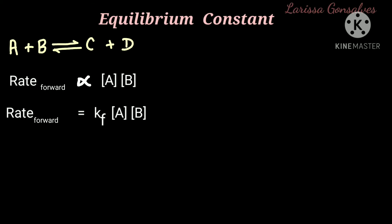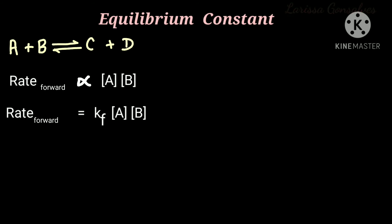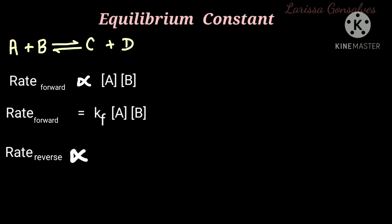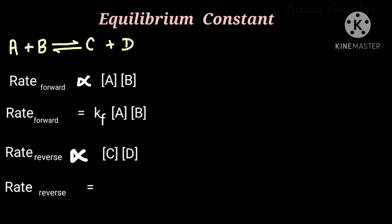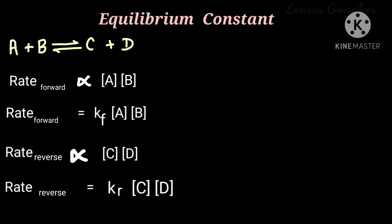Now if we consider the reverse or backward reaction, C plus D gives A plus B. Here C and D are the reactants and A and B are the products. According to the rate law, the rate of the reverse reaction is directly proportional to the concentrations of C and D. Removing the proportionality sign, the equation becomes: rate reverse equals KR times concentration of C times concentration of D, where R stands for the reverse reaction.